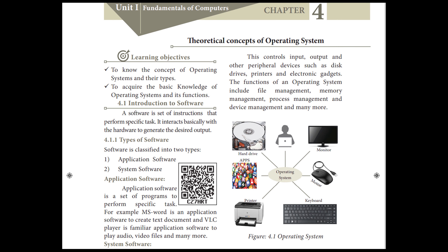From the fourth chapter, you will be seeing about the operating system. Any computer cannot work without an operating system. If you have a mobile Android smartphone, the Android operating system will be there. If you have an Apple iPhone, it will have iOS. If you have a computer, it may have a Windows or Linux operating system. Any one operating system will be there for the processing of the computer. Here you will be learning about software — application software and system software — and the types of operating system and how it will work.